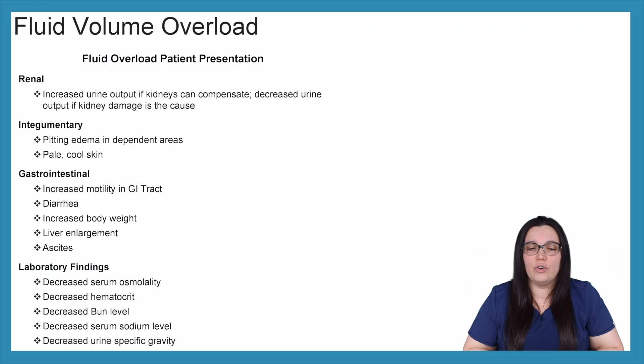Gastrointestinal, we're going to have an increased motility of our GI tract, much more diarrhea than we normally would have with any other disease processes if we're fluid overloaded. Increased body weight because that fluid literally has no place to go. Liver enlargement, again, fluid is leaking out of the vessels into the interstitial spaces causing liver enlargement as well as ascites.